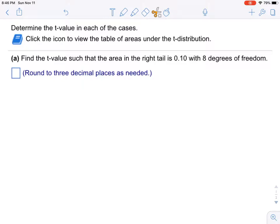tail is 0.1 with eight degrees of freedom. Alright, so let me draw a picture of a normal distribution, or in this case a t-distribution. We have the area in the right tail. So we can give ourselves a little tail on the right - that area is 0.1, and we're